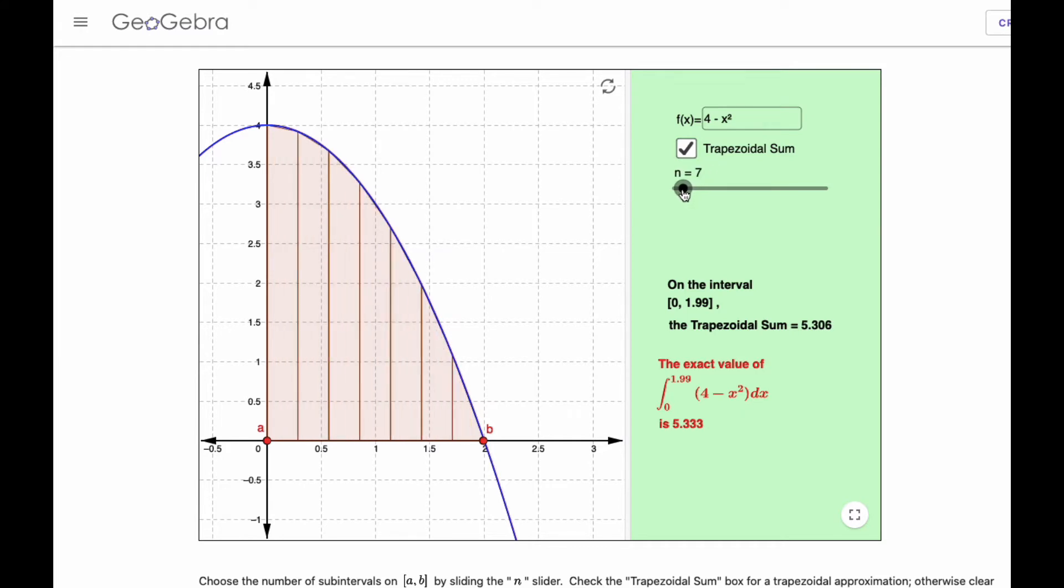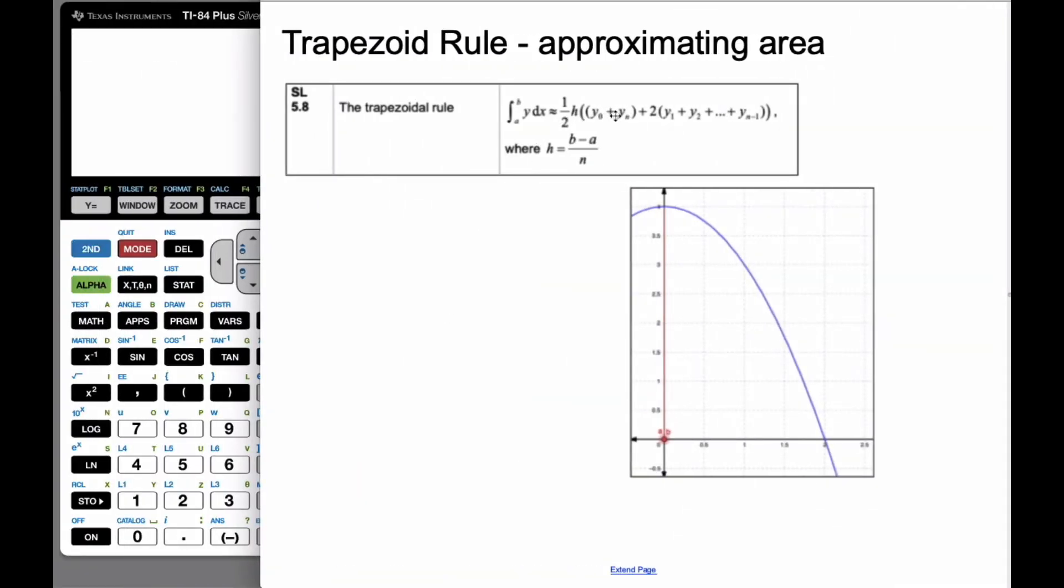But when we build this area out, what happens here is I have the height times the bases. And this base here at 0.5 will be used twice, once for this first trapezoid and once for the second trapezoid. But the endpoints are only used once. And that's what we see on this formula here. The endpoints are used once, or all the other values are used twice. And so that's where this formula comes from.